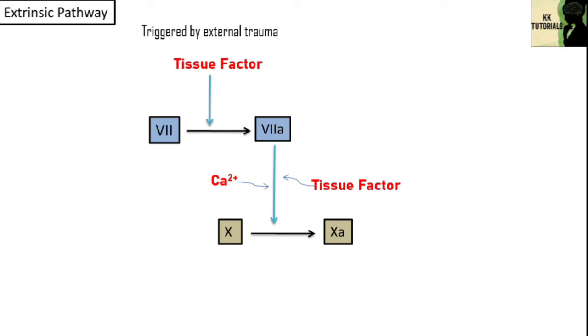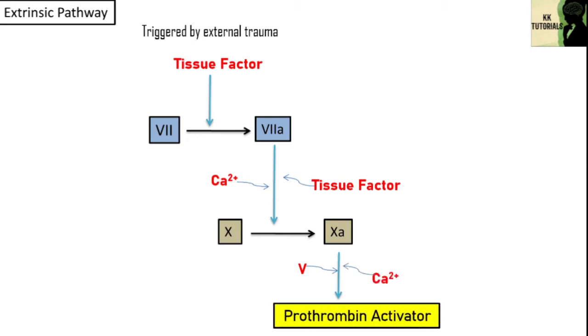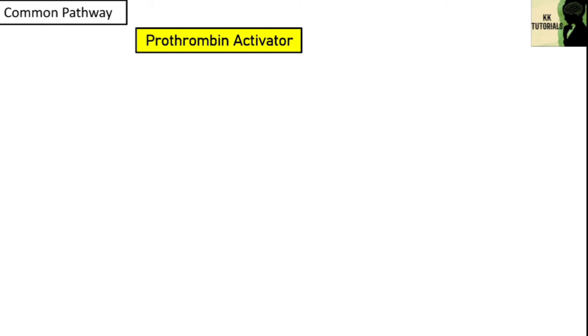The next step is similar to that of the intrinsic pathway. As we saw, both pathways lead to the formation of activated factor 10a, which forms prothrombin activator. From here, the pathway of clot formation is common.